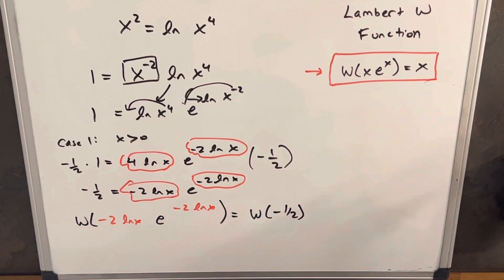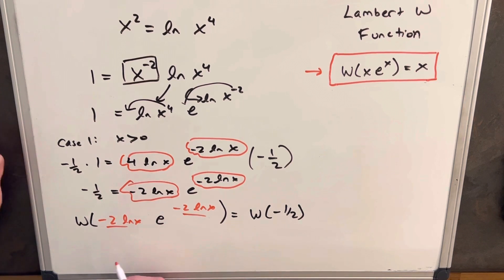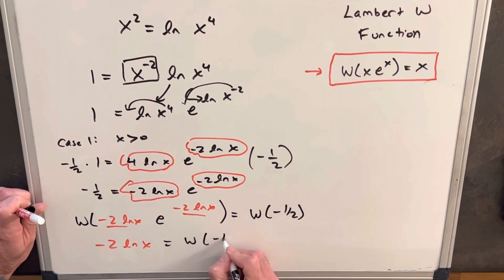And so doing this now, we have our equivalent entries here in red, so then we can write this as minus 2 ln x is going to equal just Lambert W of minus 1/2.